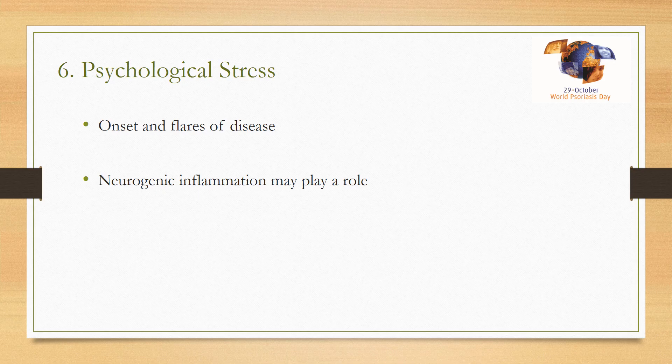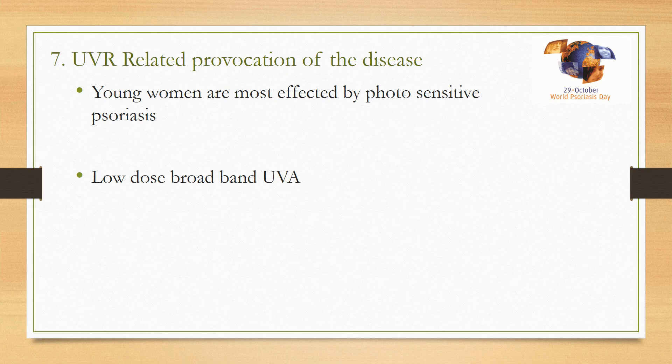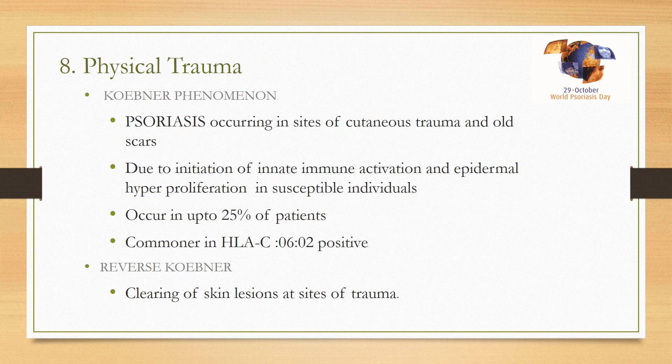Psychological stress has a very complex relationship with psoriasis. It can result in onset and flare of the disease, and once a flare occurs, it can result in more depression or psychological stress, creating a vicious cycle. Neurogenic inflammation may also play a role — sensory nerves increase psoriatic flux, and neurogenic inflammatory mediators like substance P and calcitonin gene-related peptide also increase psoriatic flux, linking psychological stress to exacerbation.